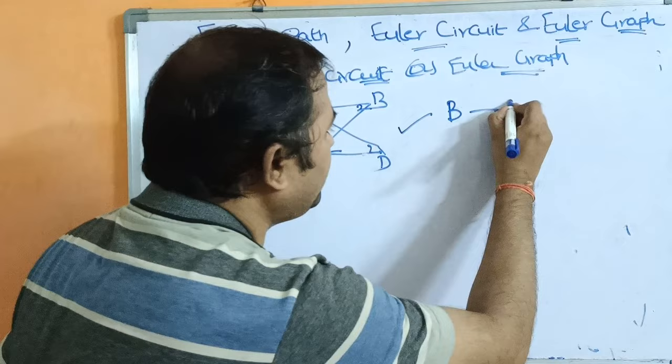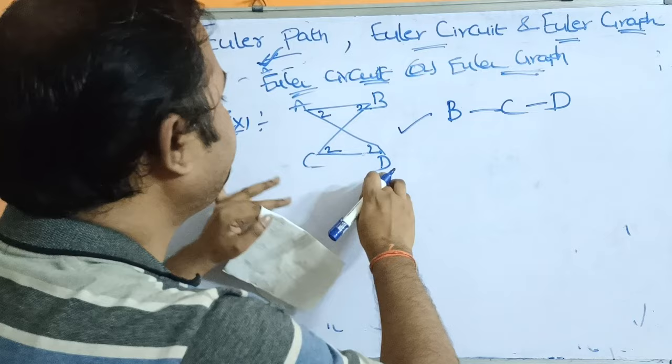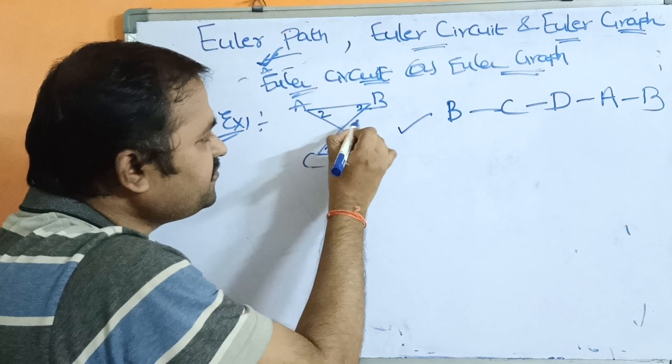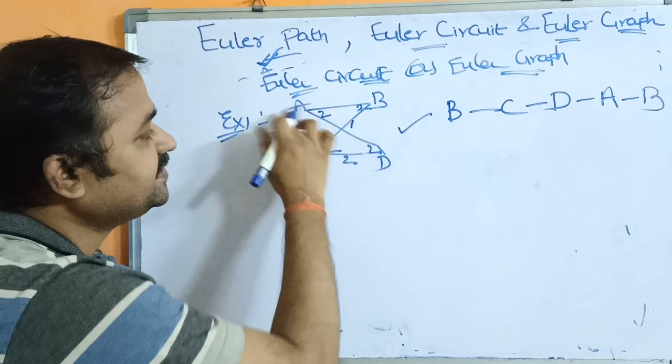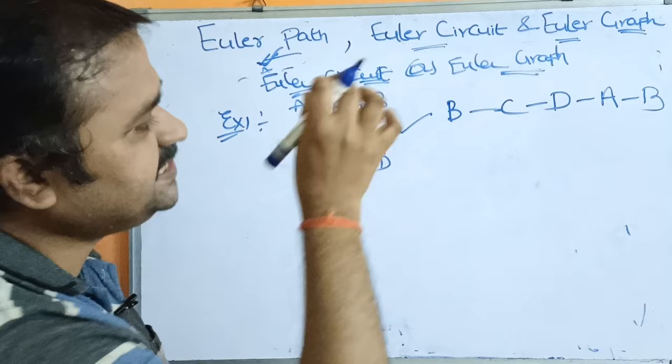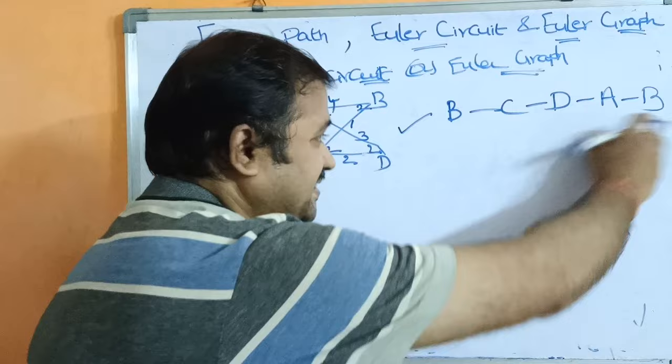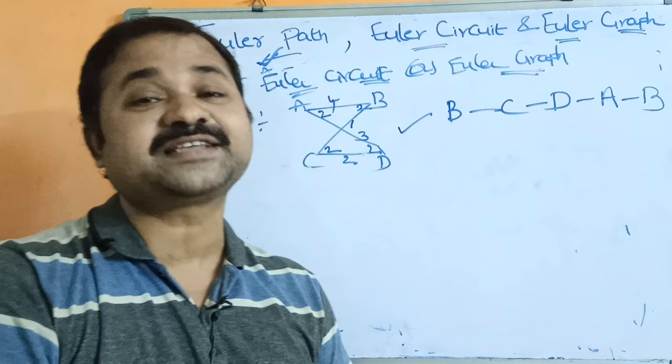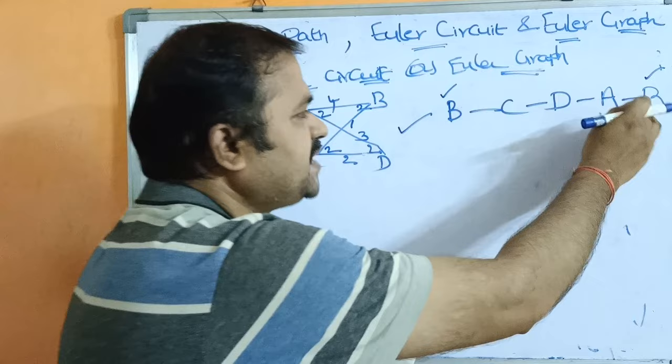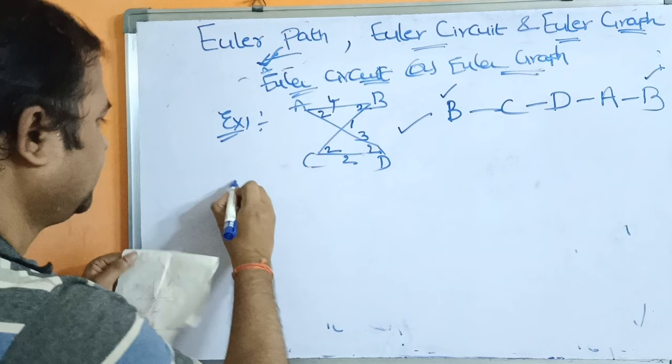Let us determine the Euler circuit. Start from B: B to C, then C to D, then D to A, then A to B. Each edge is visited exactly once: B to C, C to D, D to A, A to B. The starting vertex is B and the ending vertex is B — both are the same. So we can confirm this is an Euler circuit and this graph is an Euler graph.